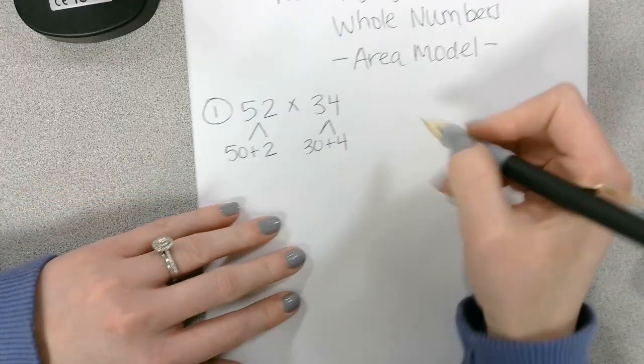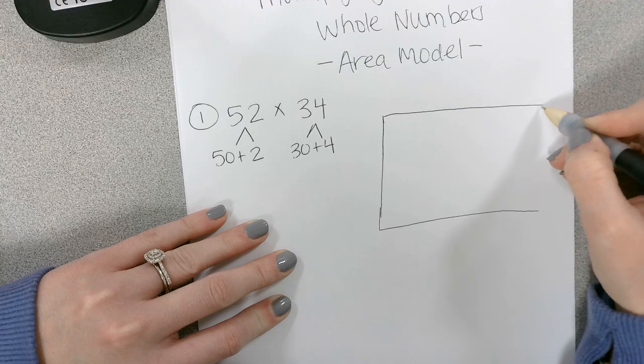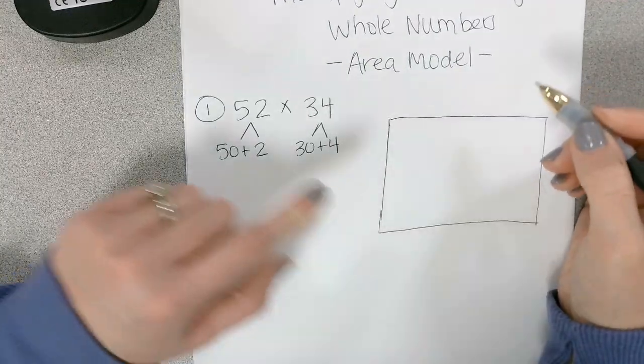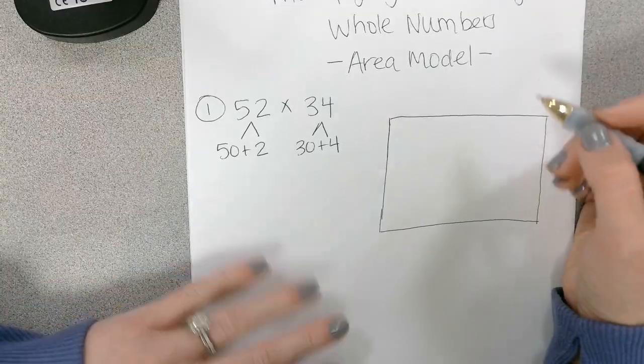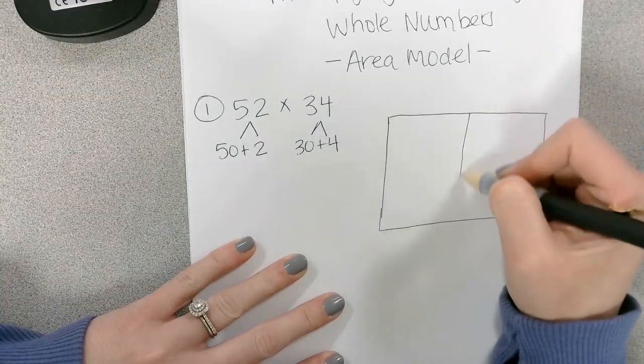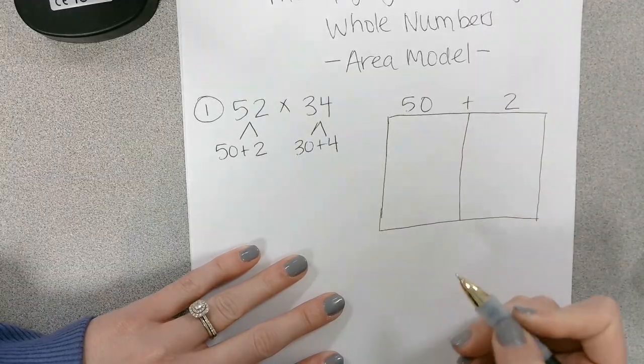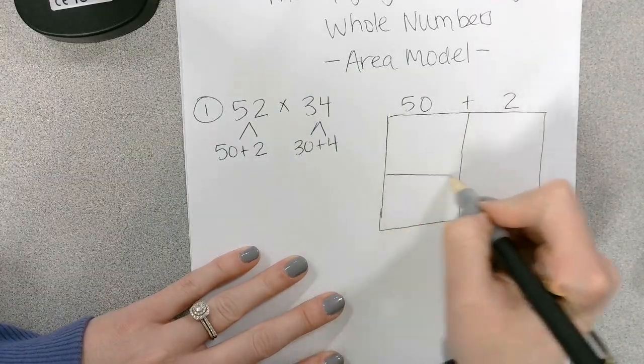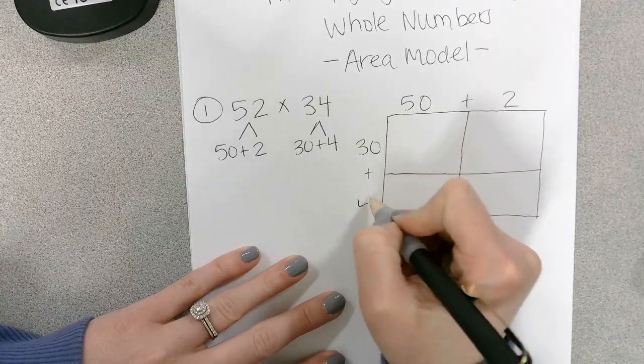Then we have our area model that we draw, which is going to be a big square. This strategy is really helpful when looking at place value. So I'm going to break it apart, 50 plus 2 on the top. I'm going to break it apart horizontally and do 30 plus 4.